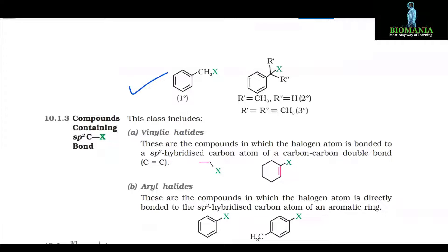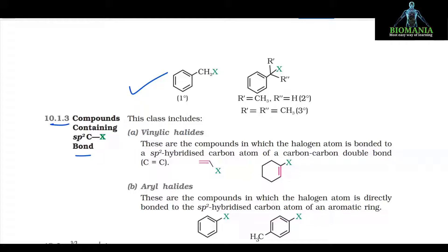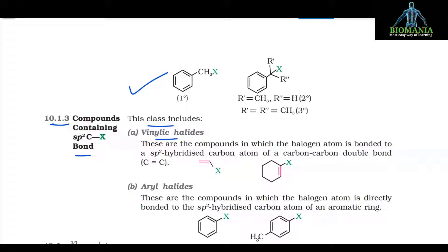10.1.3 Compounds containing sp2 C-X bond. This class includes vinylic halides. These are the compounds in which the halogen atom is bonded to a sp2 hybridized carbon atom of a carbon-carbon double bond. Here you can see this.